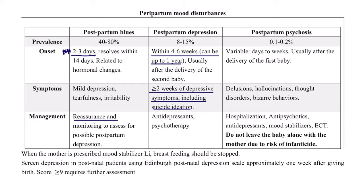Postpartum psychosis is a very rare condition occurring in 0.1 to 0.2 percent of mothers. Onset is variable — within days to weeks — usually after delivery of the first baby. The mother often has a history of bipolar or mood affective disorders. Symptoms include delusions, hallucinations, thought disorders, and bizarre behaviors. Critically, you do not leave the baby alone with the mother because she might harm the child. Treatment is hospitalization, followed by antipsychotics, antidepressants, and mood stabilizers.